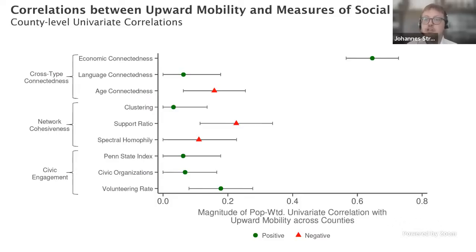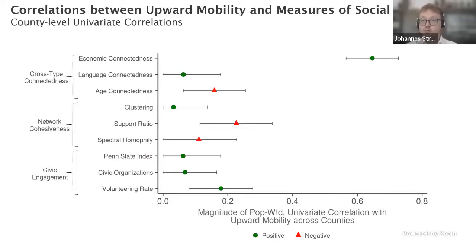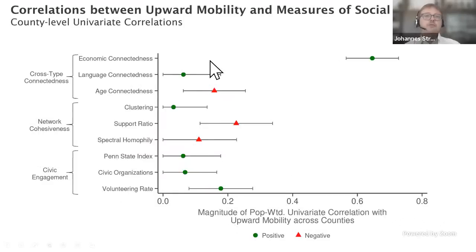While economic connectedness is the most predictive measure for upward income mobility, other measures like network cohesiveness are actually more predictive for outcomes such as life expectancy. We don't think there is a right or wrong one — all measures have solid theoretical foundations. The beauty of measuring all of them is that we can explore which measure matters for which outcomes.